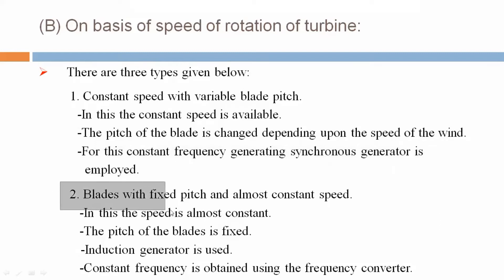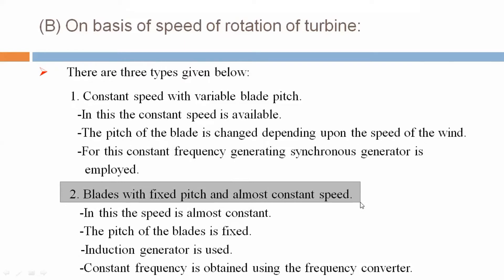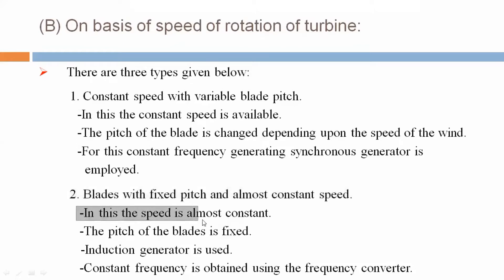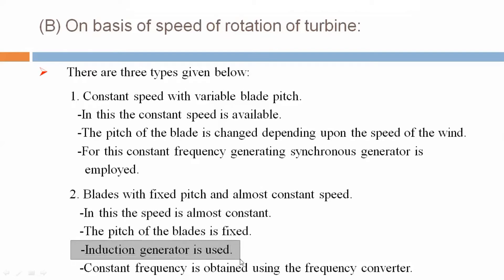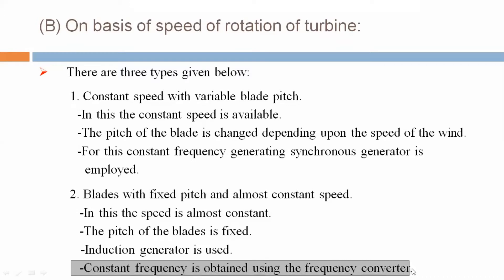Second: blade with fixed pitch and almost constant speed. In this, the speed is almost constant, and the pitch of the blade is fixed. An induction generator is used. Constant frequency is obtained using a frequency converter.